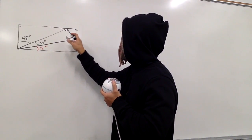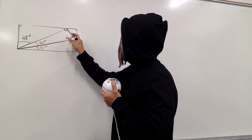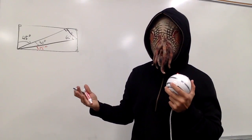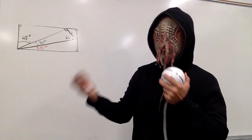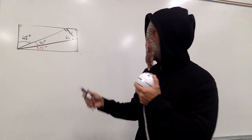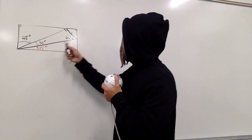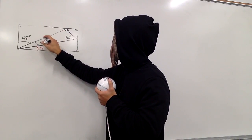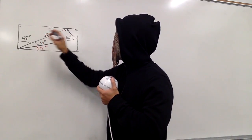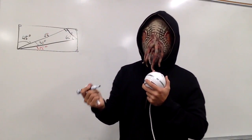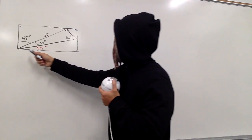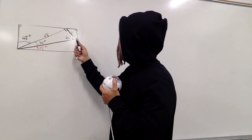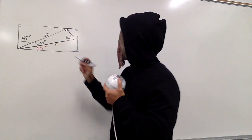Right here, this is the shortest side. I would like to make this equal to 1. If this is 1, this right here has to be square root of 3, isn't it? And the hypotenuse would just be 2.